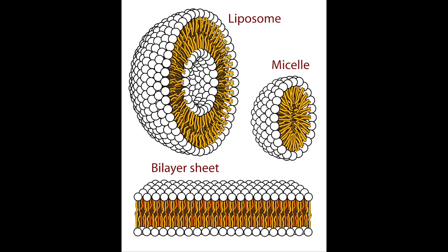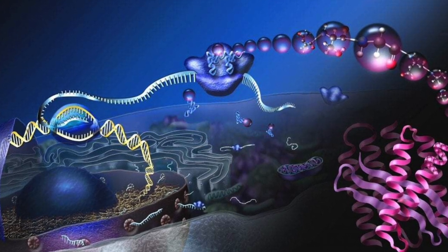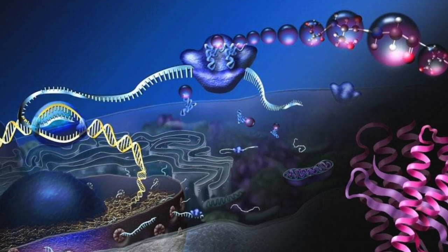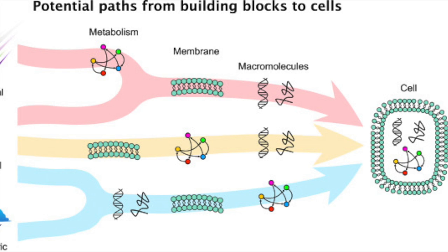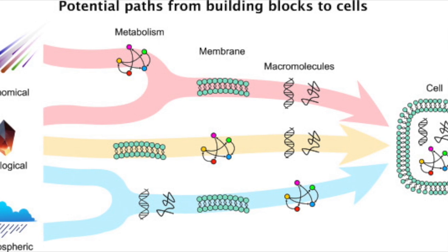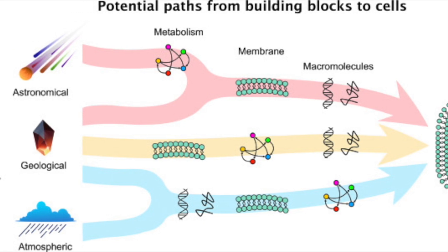One of the key milestones in the quest for understanding abiogenesis is the iconic Miller-Urey experiment. Conducted in 1952, this experiment aimed to demonstrate how organic molecules — the building blocks of life — could spontaneously form from simple inorganic compounds under conditions similar to those of the early Earth. This groundbreaking experiment showcased that the chemical complexity required for life could indeed arise from basic elements. The story of abiogenesis is far from simple — it's a tale of gradual processes and momentous events, taking us from a lifeless world to a thriving biosphere through the interplay of chemistry, physics, and the dynamic forces of our planet.